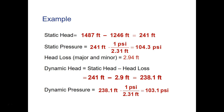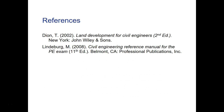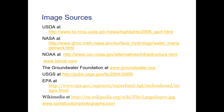Is 103.1 PSI an acceptable pressure for a residence? No — it's over the 80 PSI maximum and well above the 60 PSI considered high pressure. In most cases you would need to install a pressure reducing valve to bring it down to a usable level. Trying to use 103 PSI at the house would cause fixtures to wear out far too quickly. The hardest part of this assignment is correctly applying the Hazen-Williams formula — do the exponents first, then multiply and divide. Good luck!